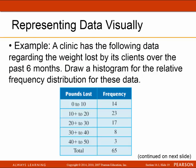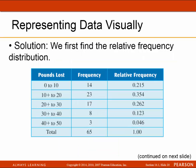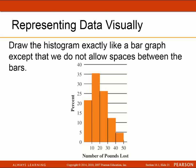Here's an example: a clinic has data on weight loss by its clients over the past six months. The classes represent pounds lost: 0 to 10, 10 to 20, and so on, with a total frequency of 65. The relative frequency is the frequency divided by the total, and should sum to 1. In the histogram, the bars are all touching each other; the vertical axis goes from 0 to 40 by 5, and the horizontal axis shows the classes.